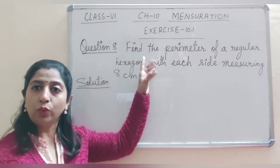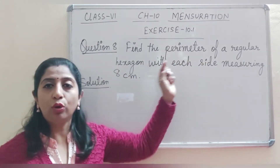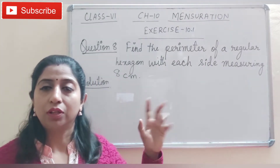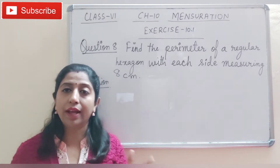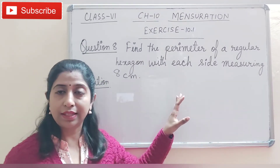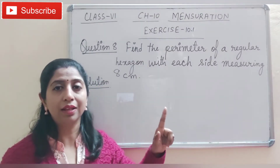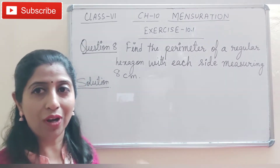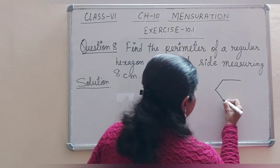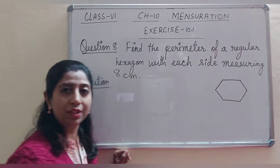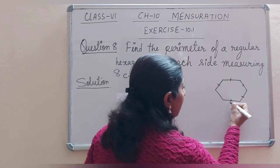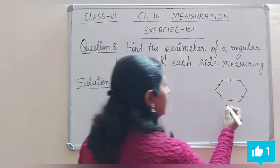Now see question number 8. In question 8, we have to find the perimeter of a regular hexagon with each side measuring 8 cm. Here we have to find the perimeter of a regular hexagon. First of all, we have to draw a regular hexagon. A hexagon has 6 sides and a regular hexagon has 6 equal sides. Let us suppose this is a regular hexagon — all the sides are having equal measurement, that is 8 cm.